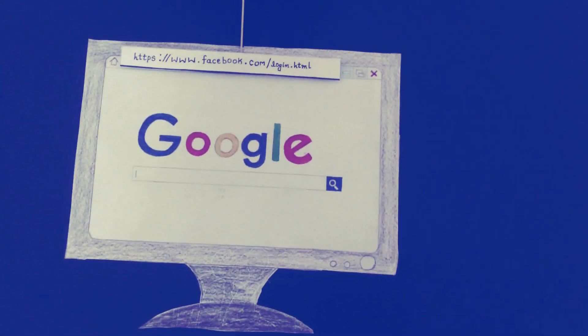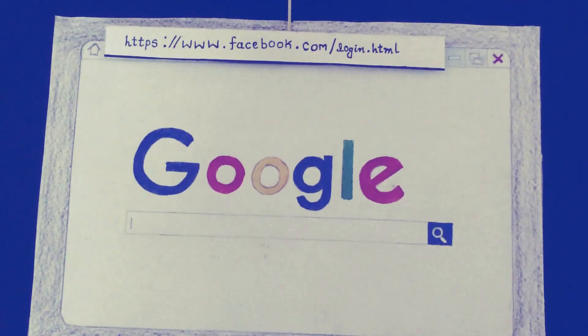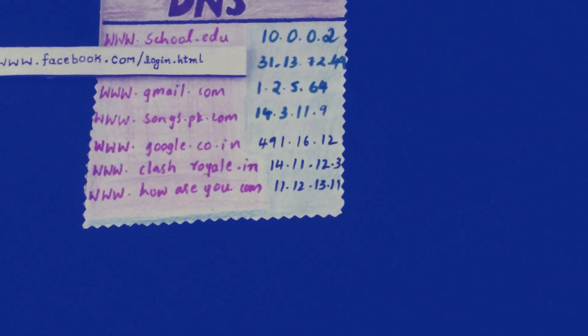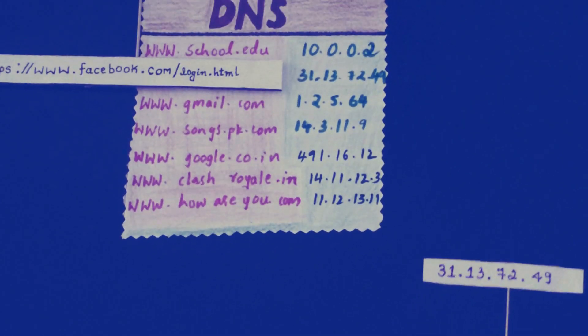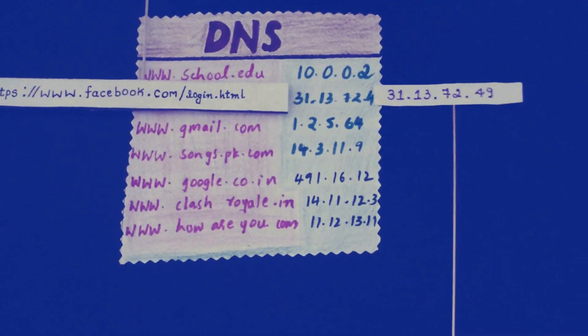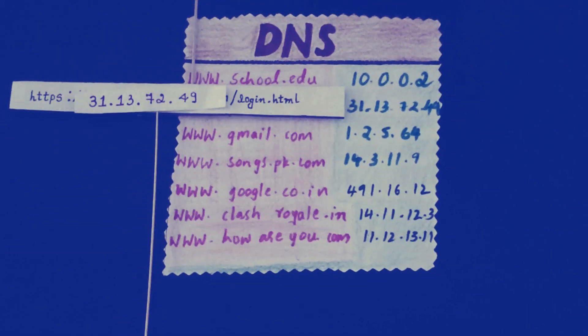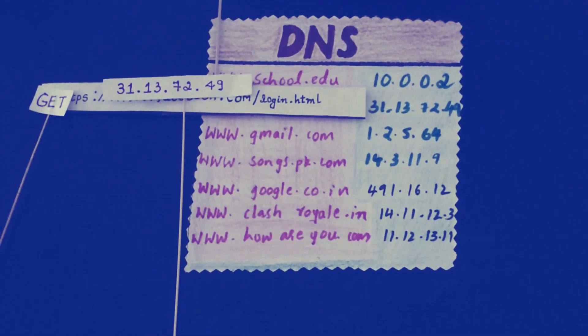Shubham is using the browser to get a web page. He types the protocol HTTP, server name www.facebook.com, and the specific filename login.html. The server name must be converted to a numeric address to connect to the server. The Domain Name Service matches the domain name to the numeric address, and the number is matched and placed on the domain name.